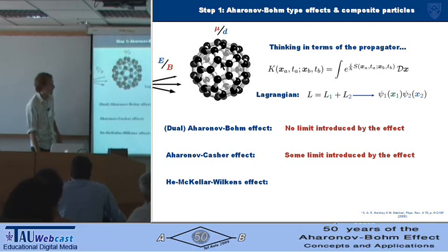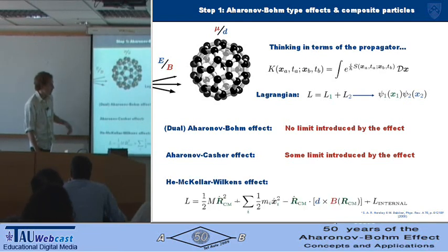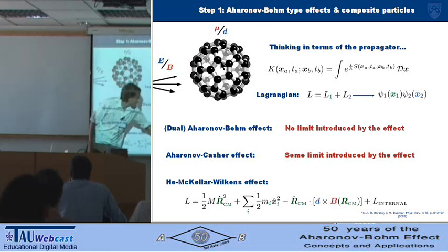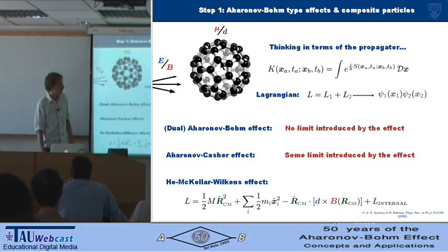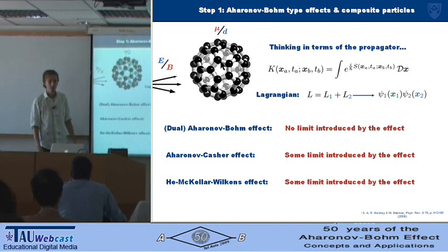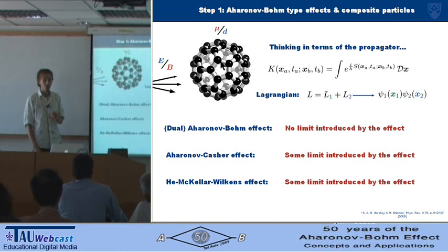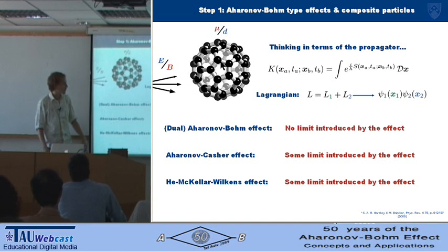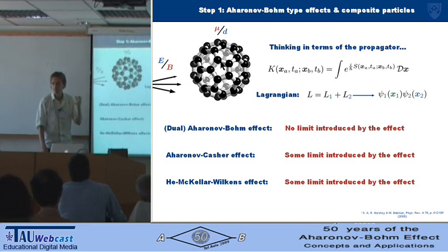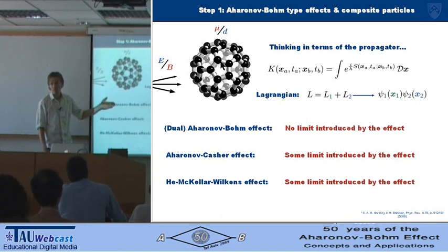And we see the same thing in the He-McKellar-Wilkens effect, because the electric dipole moment is sitting in the Lagrangian, and that contains all of the internal variables. So again there's some limit in that effect. We're going to lose coherence just by trying to observe an Aharonov-Bohm type effect—either Aharonov-Casher or He-McKellar-Wilkens—with a big molecule. We're going to couple the internal degrees of freedom to the centre of mass, but not in the Aharonov-Bohm effect.